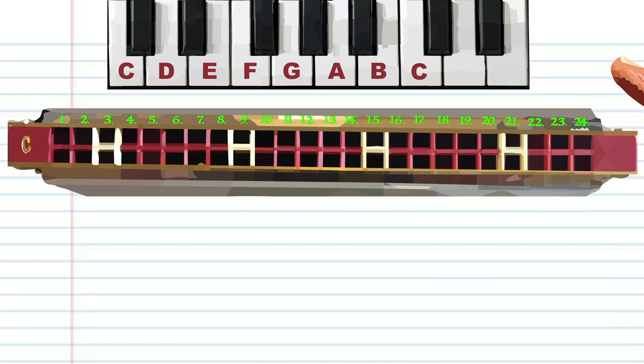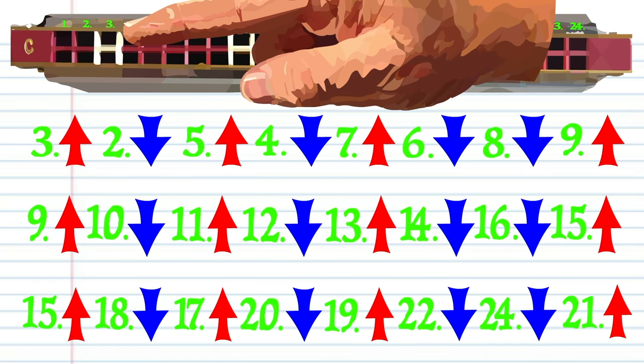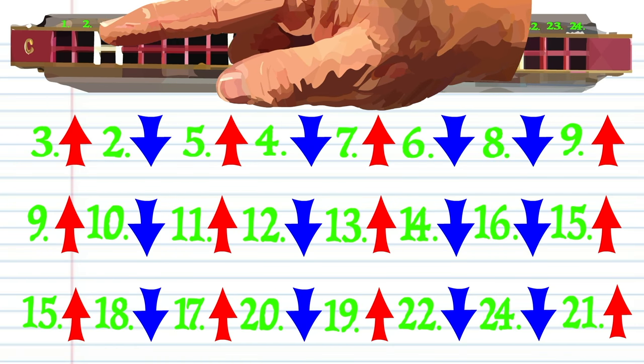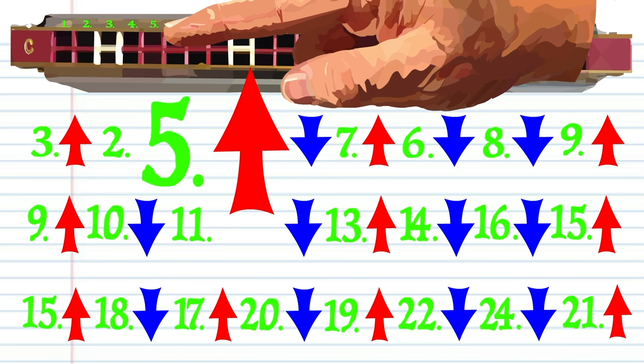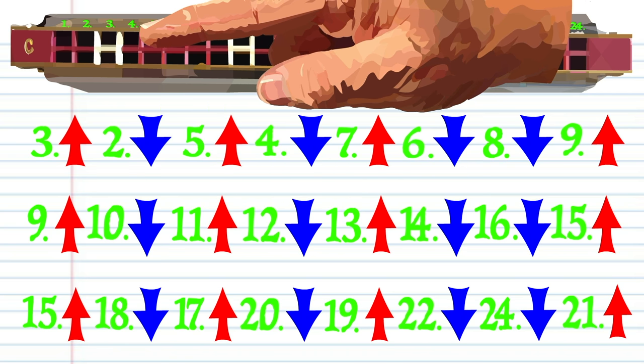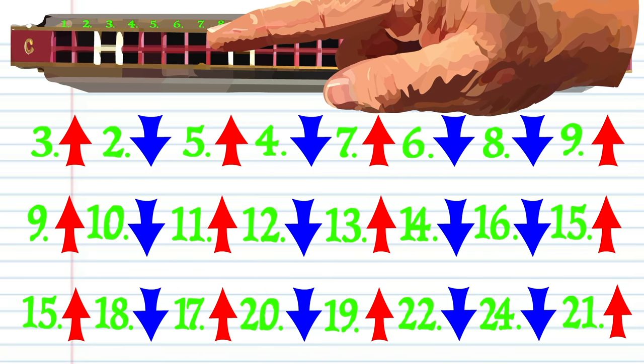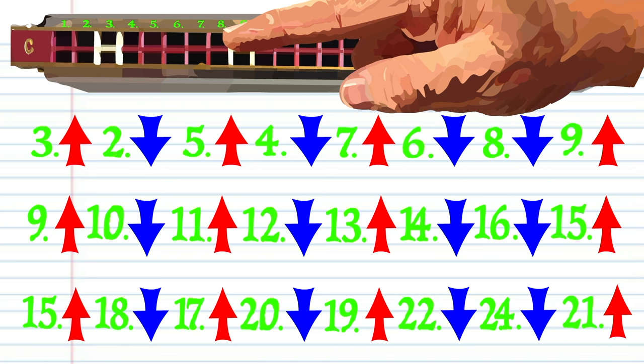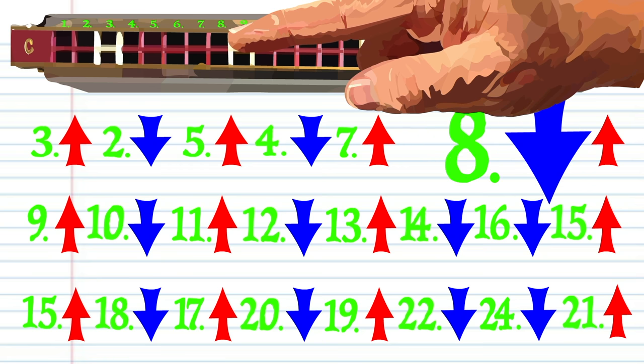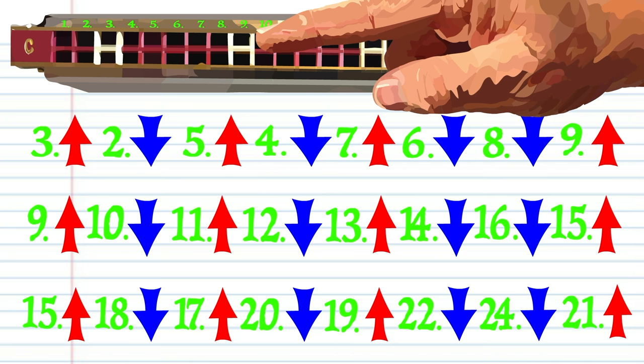So to play the C major scale, or the scale that your harmonica is actually in, the tab would look something like this: blowing into 3, breathing through 2, blowing through 5, breathing through 4, blowing into 7, breathing through 6, breathing in through 8, blowing into 9.